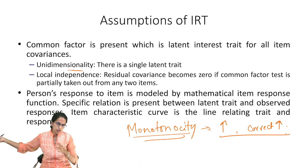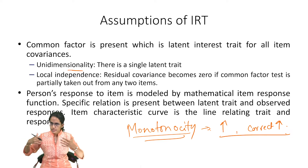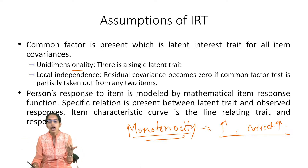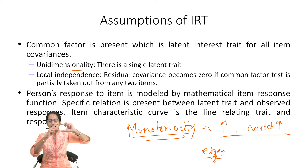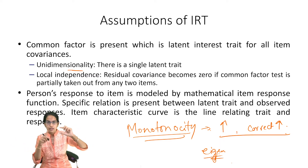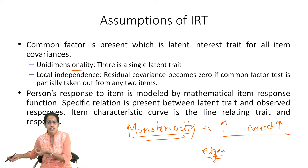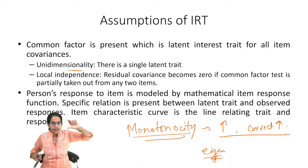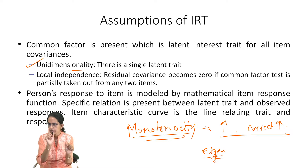Going into the mathematical aspect of item response theory, when we do the statistical calculation, we find out the eigenvalues. One of the eigenvalues is extremely high compared to the others — for example, one might be around 1.9 while the others are 0.7, 0.8, 0.9. The trait showing an extremely high eigenvalue is the one representing unidimensionality. That is the second important assumption.